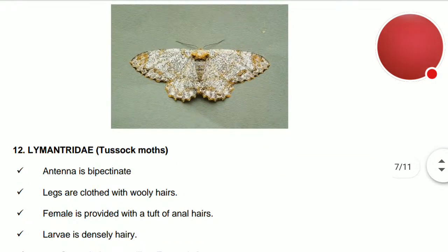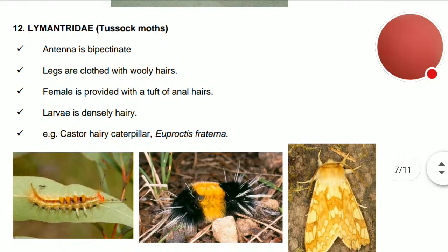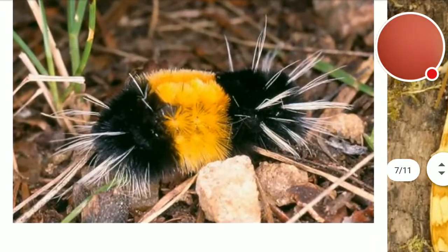Lymantriidae — the tussock moths. The antennae are bipectinate. Legs are clothed with woolly hairs. The female is provided with a tuft of anal hairs. The larvae are densely hairy. Example: castor hairy caterpillar, Eupterote fraterna.